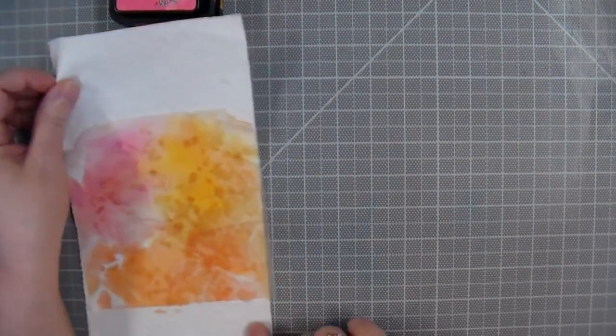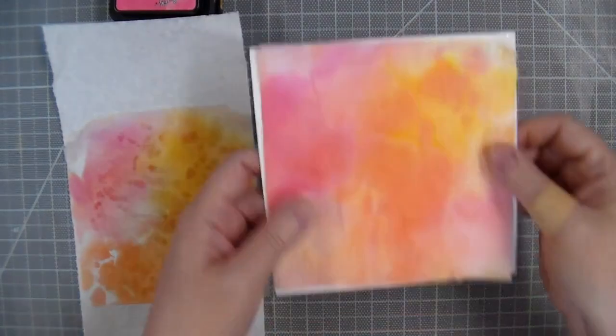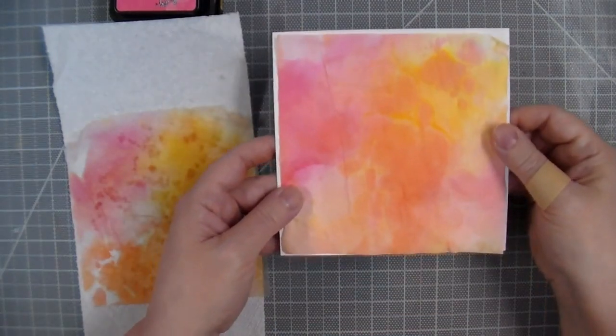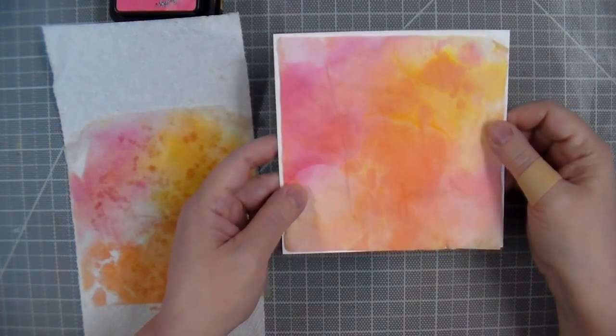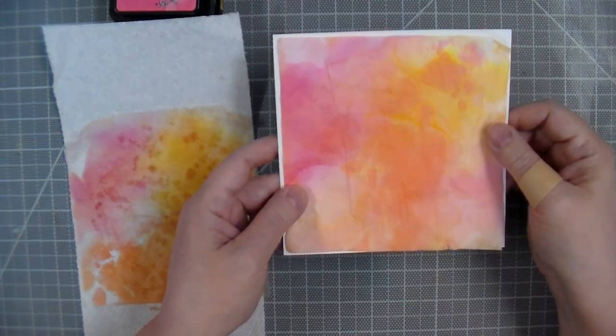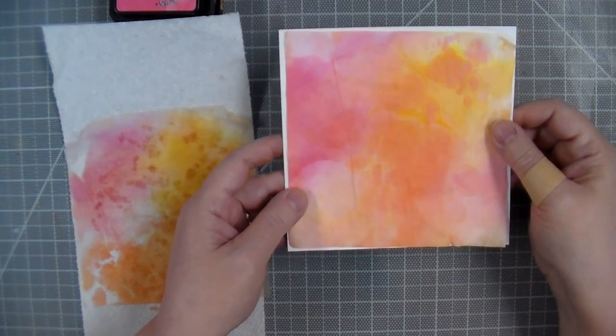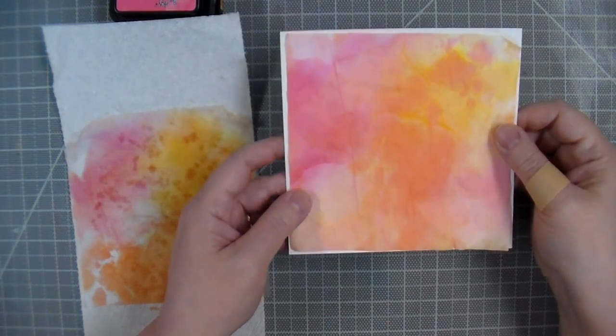Now if you find that the colors aren't intense enough for you, you can layer colors, drying in between each time. This piece has two layers of ink on it, and you can see it's very intense compared to the first one. It looks beautiful against the white cardstock. You need to have the white backing for the tissue paper colors to show.